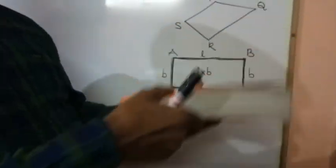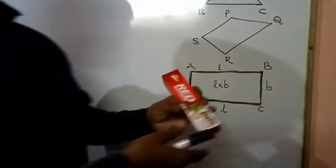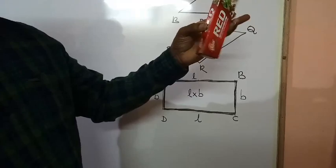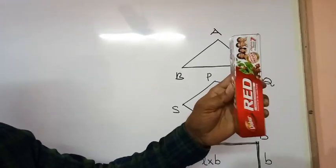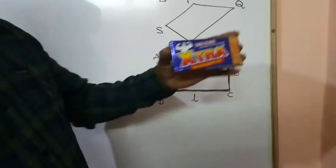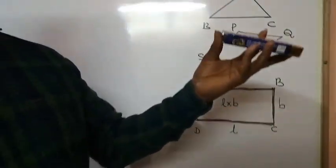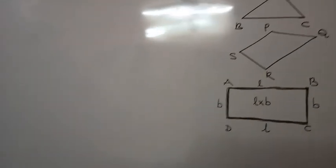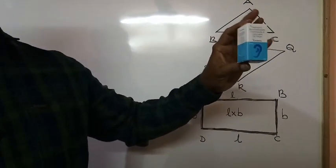Cuboid! This shape is known as a cuboid. This cuboid has rectangular sheets of paper. What is the shape of this object? It is also a cuboid — it is also a cuboid.